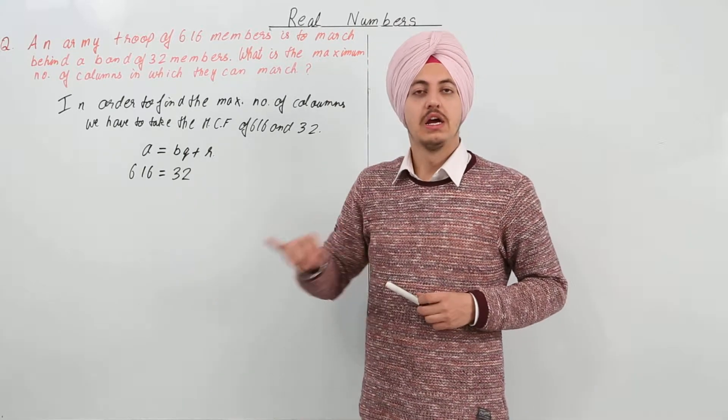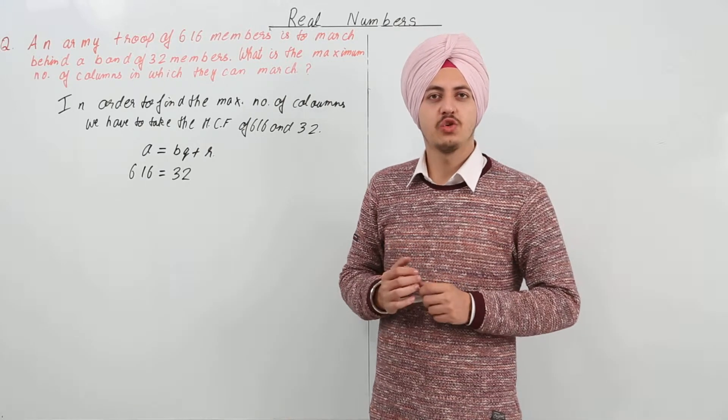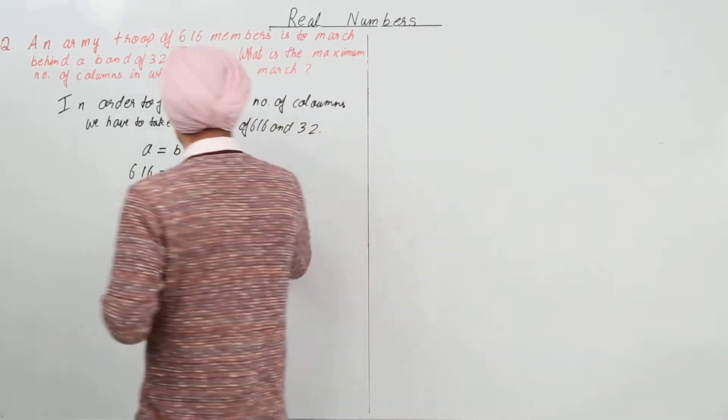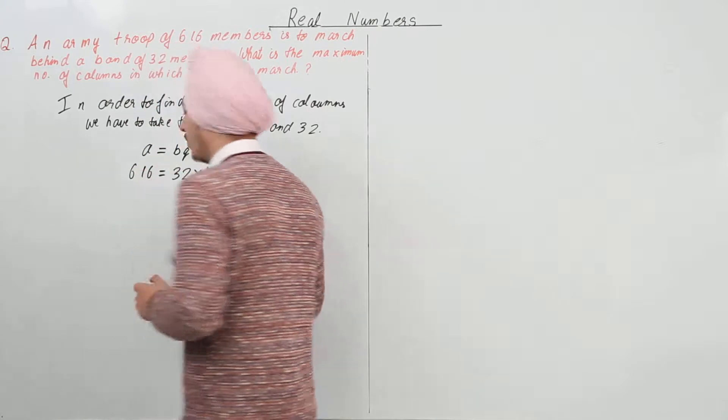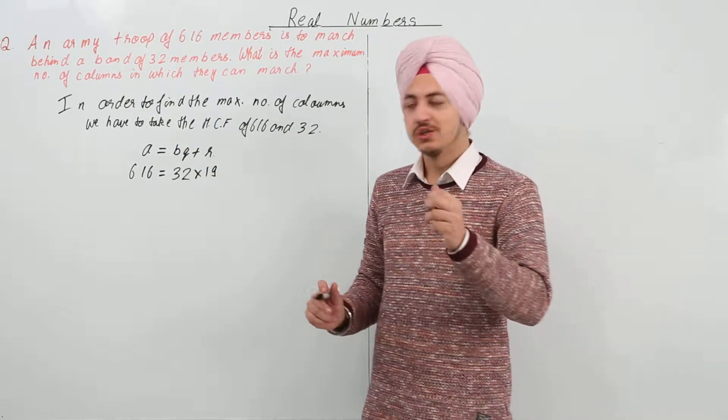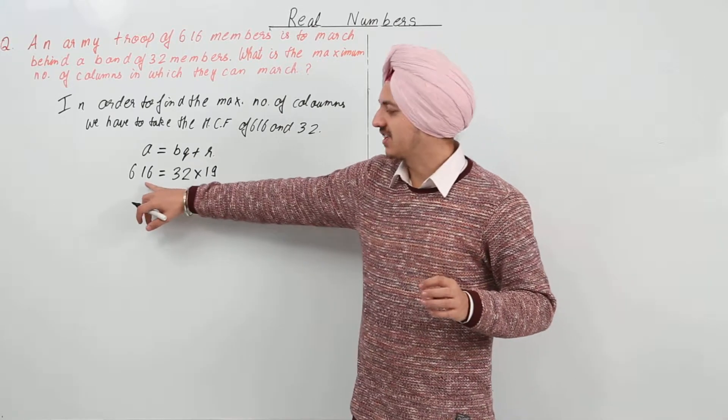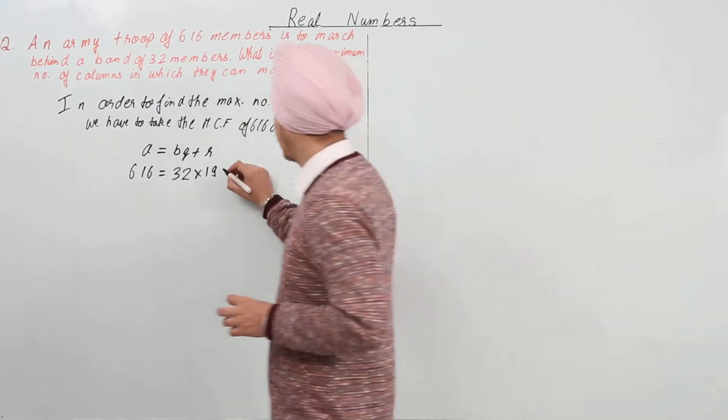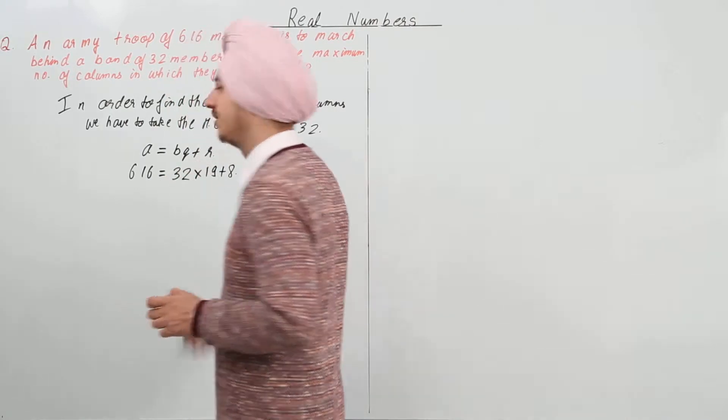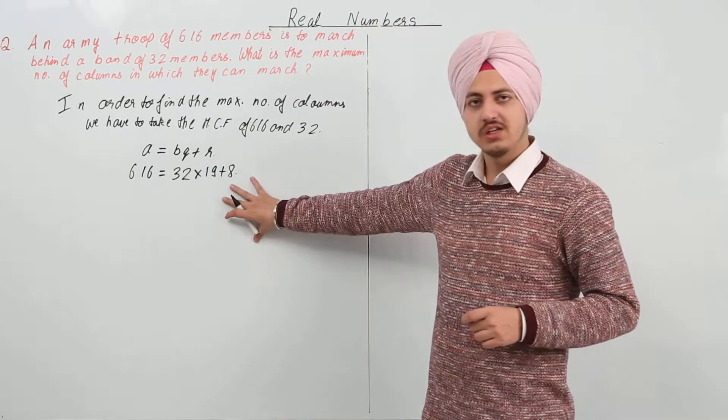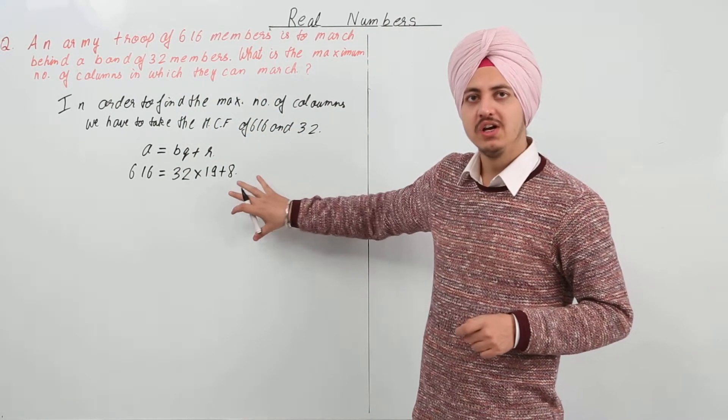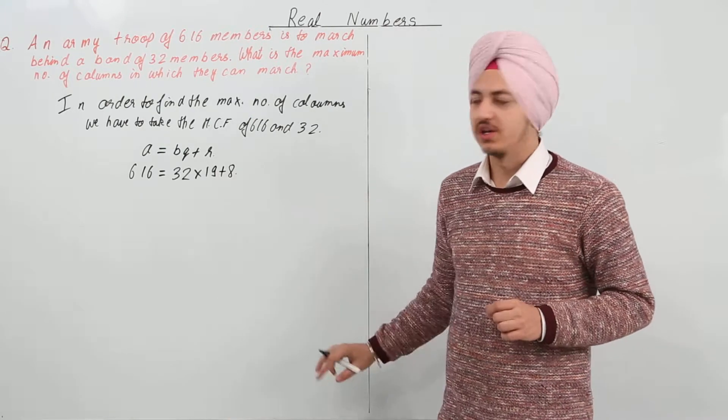If we multiply 32 into 19, what is 32 into 19? 608. So 616 minus 608 is 8. This is the first step for Euclid's division algorithm.